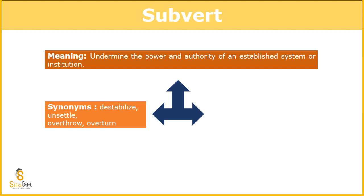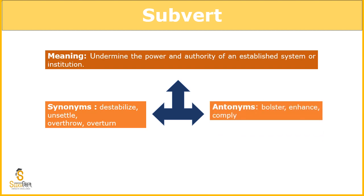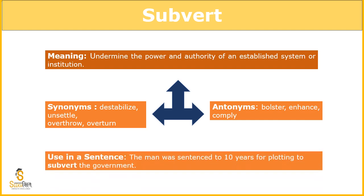Synonyms of subvert: destabilize, unsettle, overthrow, overturn. Destabilize means what a stable thing is — something that is fixed and steady. Like we need a stable government, but if people start protesting as is happening in America now, it gets destabilized. Overthrow means to bring someone down from a position, overturn means to change the path entirely. Antonyms: bolster, enhance, comply — comply means to agree with something, to agree humbly and lovingly without resistance. Use in sentence: the man was sentenced to 10 years for plotting to subvert the government.